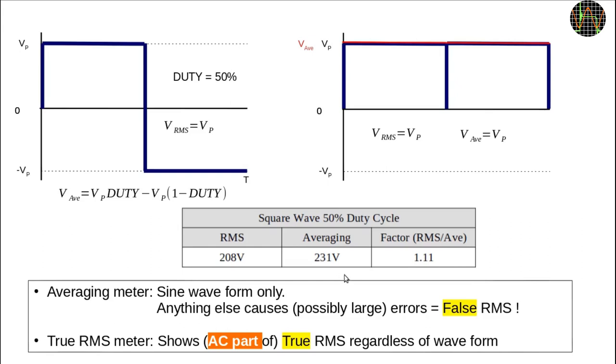Which is exactly what we saw earlier when comparing true RMS and averaging meters. So the key difference between an averaging and a true RMS meter is that for an averaging meter everything is a sine wave and if it is not the results are generally wrong by a varying amount which can get quite large. For non-sine waveforms the averaging meter shows a false RMS. A true RMS meter instead produces an accurate result of the AC part of the RMS taking the waveform into account.